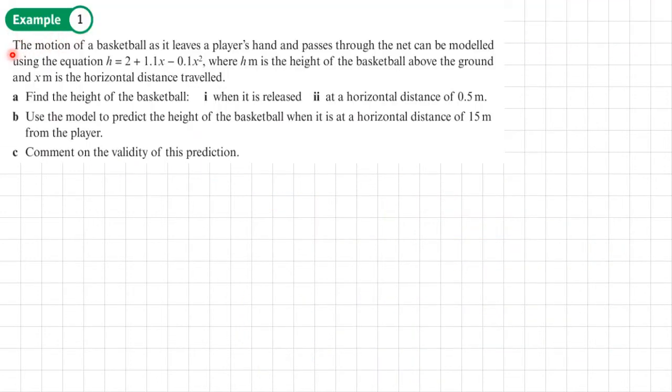Example 1: The motion of a basketball as it leaves a player's hand and passes through the net can be modeled using this equation here. H equals 2 plus 1.1x minus 0.1x squared, where H is the height of the basketball above the ground and x is the horizontal distance traveled.